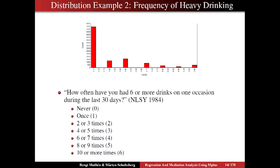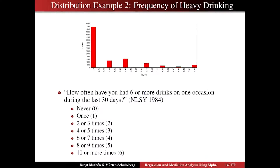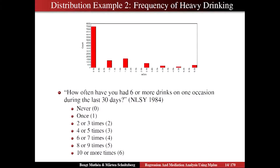What about example two — how would you handle that? The variable is frequency of heavy drinking from the National Longitudinal Study of Youth: how often had you had six or more drinks on one occasion during the last 30 days? The categories are: never, once, two or three times, four or five times, and so on — seven categories total. So clearly you could model this as a categorical dependent variable, ordinal, and there would be no violation of assumption because of the high floor effect. No assumption is violated in ordered categorical — ordinal regression modeling.